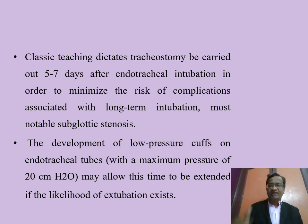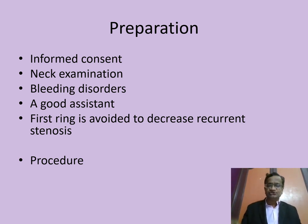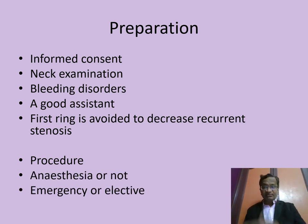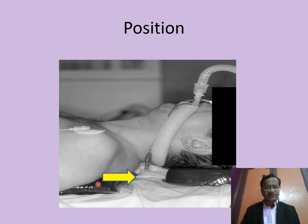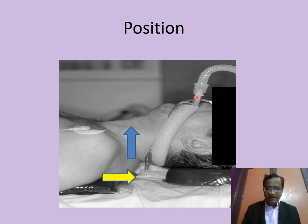Before performing a tracheostomy: informed consent, neck examination, check for bleeding disorders, and a good assistant. Excessive suctioning should be avoided as it may produce recurrence stenosis. Incision is made at the second and third tracheal rings — that is the space you need to palpate. Elective tracheostomies are mostly done by ENT surgeons; emergencies may be otherwise. For positioning, the head is slightly extended, with the front of the neck elevated using a small roll under the shoulders so the anterior neck is well exposed.